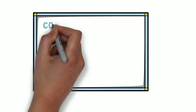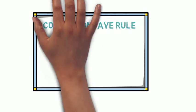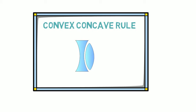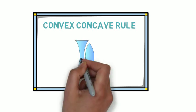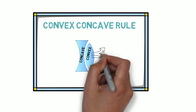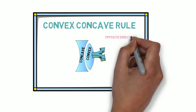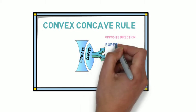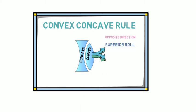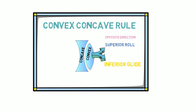So let's review the concave and convex rule. The shape on the left is a concavity, and the shape on the right is a convexity. When a convex surface moves on top of the concave surface, the roll and the glide occur in the opposite directions, which means if we have a superior roll, it will be accompanied by an inferior glide. And if there is an inferior roll, it will be accompanied by a superior glide.